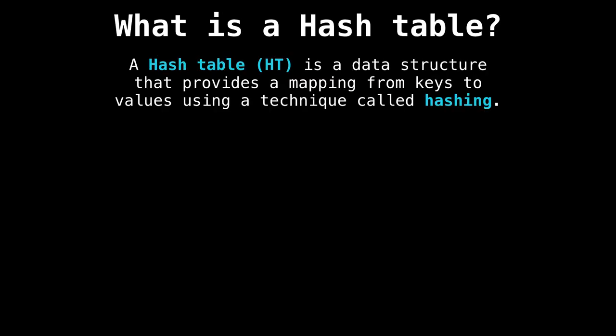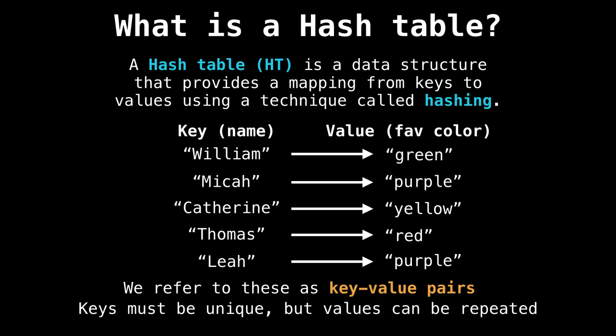Alright, so to begin with, what is a hash table? The hash table is a data structure that lets us construct a mapping from some keys to some values via a technique called hashing, which we'll talk about shortly. So the key could be any value, as long as it's unique, which maps to a value. For instance, keys could be names, which are people names, and the value could be someone's favorite color. So William's favorite color is green, Micah's is purple, Catherine's is yellow, and so on. And we call these key value pairs. So each key is associated with a value.